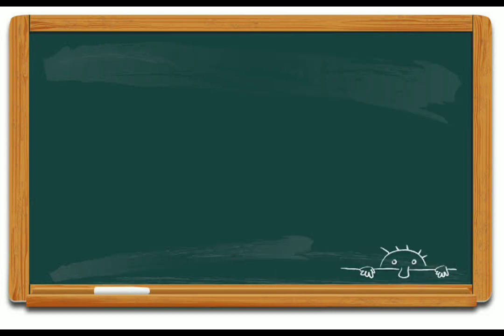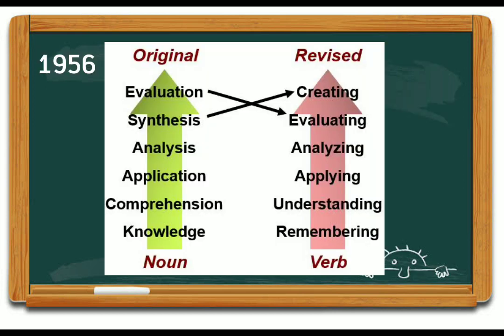Originally, Bloom's taxonomy included synthesis between analysis and evaluation. Anderson and Krathwohl, 2001, published a revision to the 1956 hierarchy. The Bloom's taxonomy words were changed from nouns to verbs.